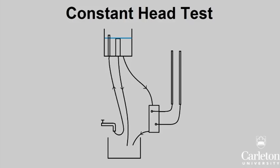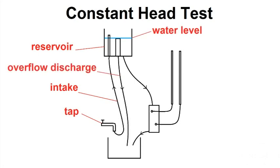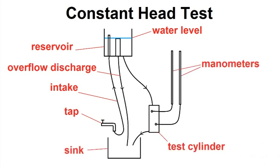This is the apparatus for the constant head test. Connected to this reservoir are three lines: an intake, which is connected to a tap and will keep filling our reservoir; a discharge line, which will take extra water out of the reservoir and keep the water level constant; and a line with a valve which connects to the test cylinder.